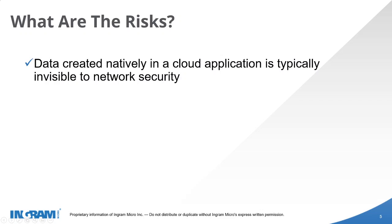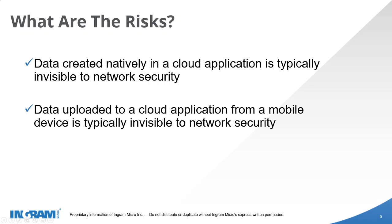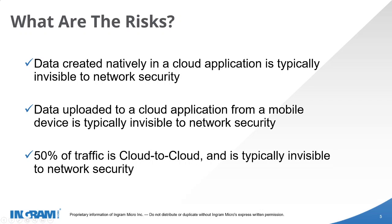So where are the risks? Data that is created natively in a cloud application is typically invisible to network security. Data that's uploaded to a cloud application from a mobile device is also typically invisible to network security. And 50% of traffic is cloud-to-cloud, which is also typically invisible to network security.